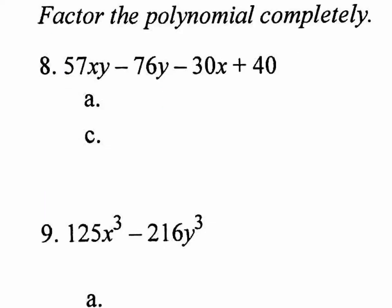Remember, factoring is reverse distributive property. Always start with the GCF — can you pull out anything in all four terms? No. There's no X's in all four terms, no Y's in all four terms, not even a multiple of 2 — 57 can't be divided by 2. So you can't pull out a GCF from all of them. But factoring by grouping might help us.